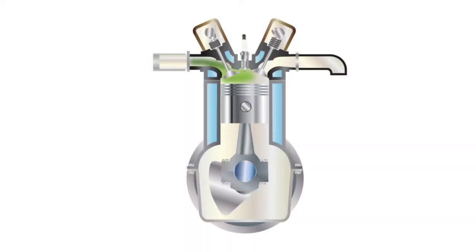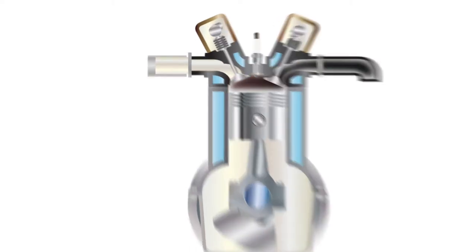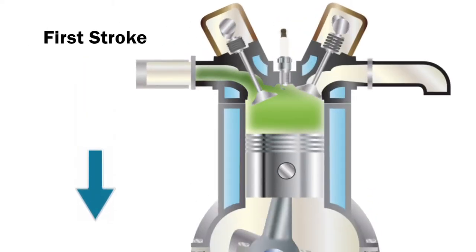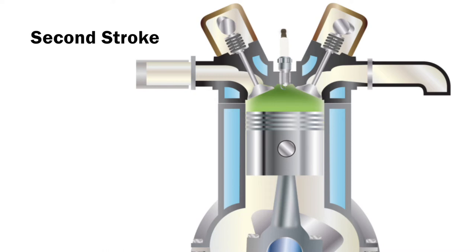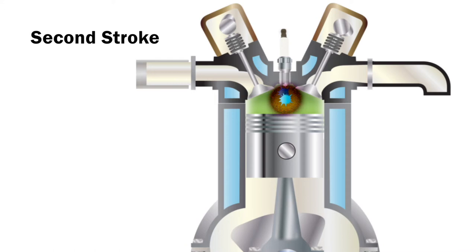Most generator system SI engines operate on the four-stroke auto cycle principle. A mixture of fuel and air is drawn into and mixed in the cylinder on the first downstroke. The second upward stroke compresses the fuel-air mixture. When this compressed mixture reaches the top of the cylinder, a spark ignites the fuel mixture.